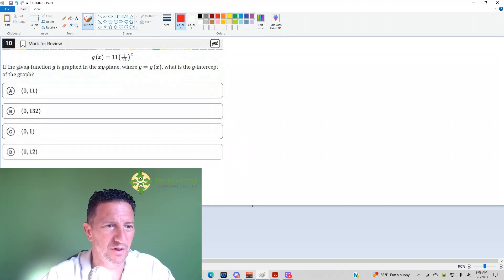Number 10 reads, the given function g is graphed in the xy-plane, where y equals g of x. What is the y-intercept of the graph? So what you need to know, two things for this question.